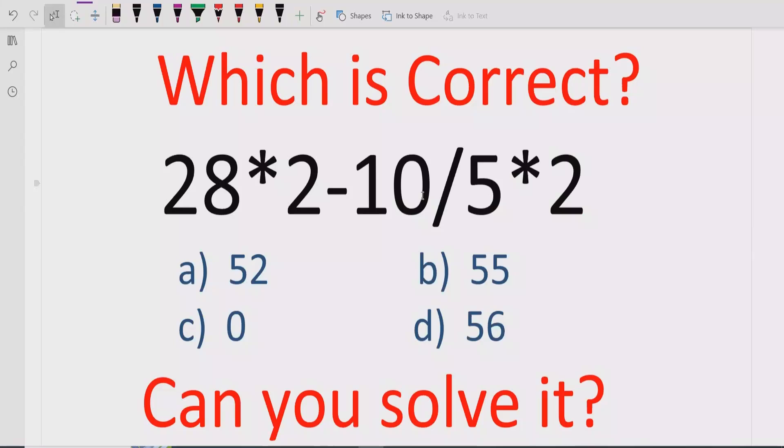Now let's start the question. This is a question where you have to multiply 28*2-10/5*2. You have to multiply 28 by 2, minus 10, divide it by 5, and multiply by 2.